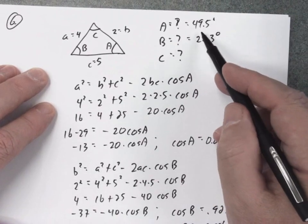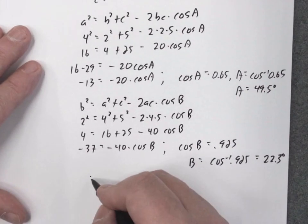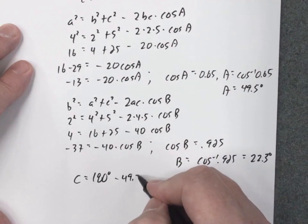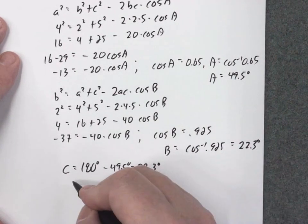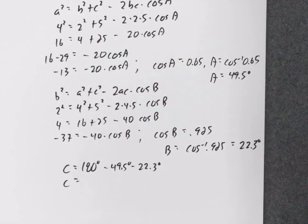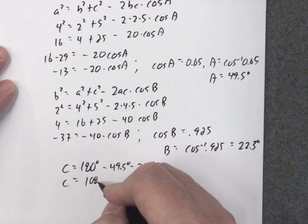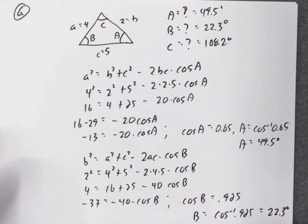For angle C, we use the fact that all three angles must equal 180 degrees. So angle C equals 180 minus angle A minus angle B: 180 minus 49.5 minus 22.3 equals 108.2 degrees. That completes problem six — law of sines and cosines are the tools we use to work on these triangles.